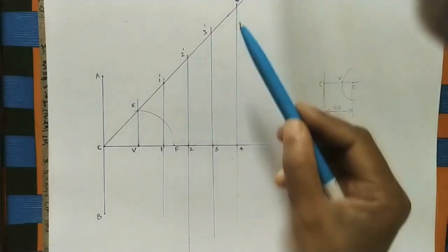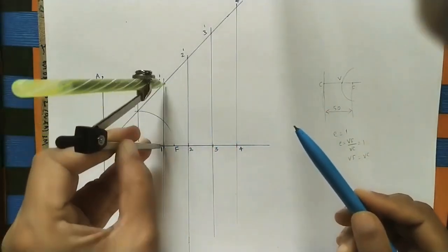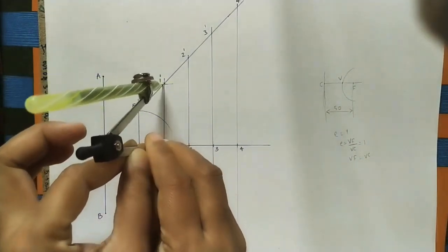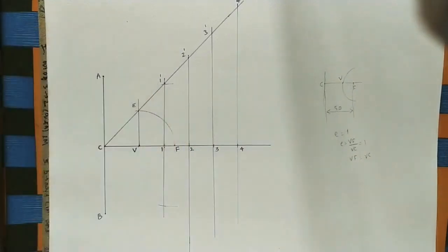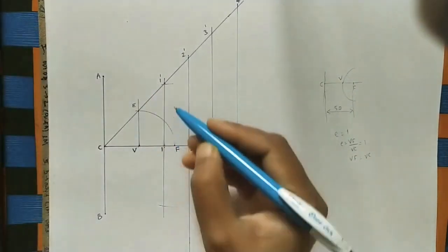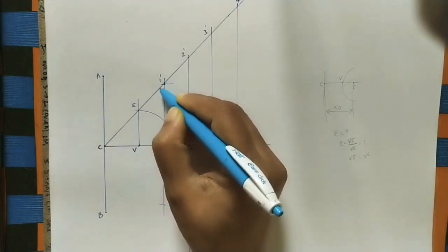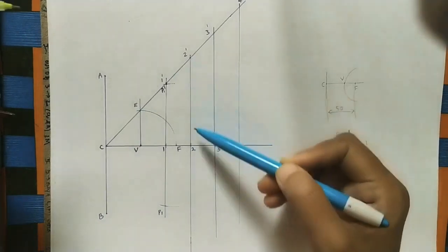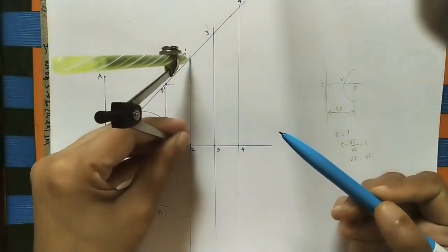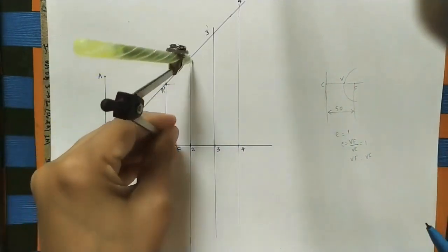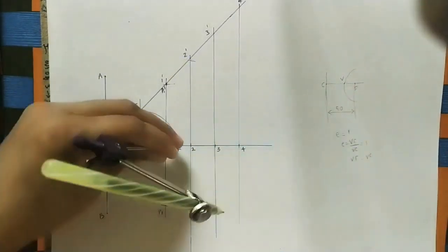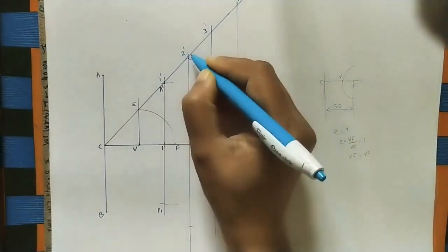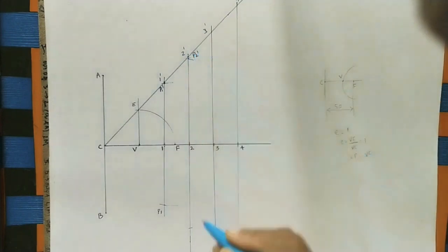After getting these points, take the 1–1' radius using the compass. With F as center, draw an arc on the first vertical line at both sides. Mark the intersection points: this point is P1' and this point is P1. Take the next radius 2–2', with F as center draw an arc on the 2–2' line at both sides. Give the intersection points here: P2' and this point is P2.